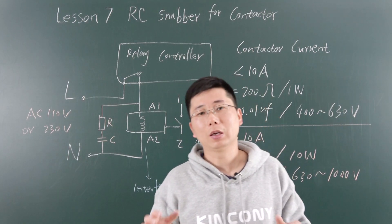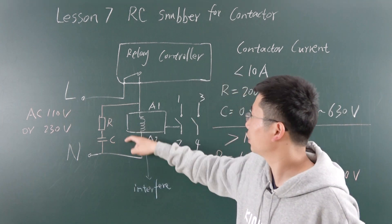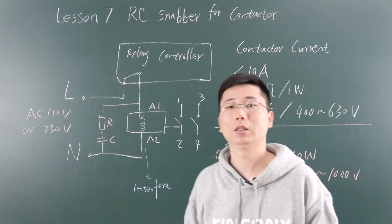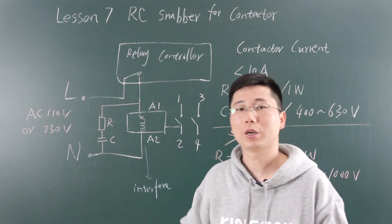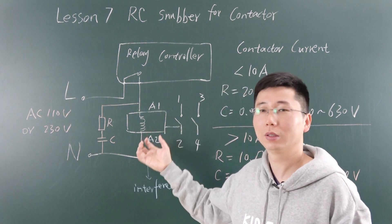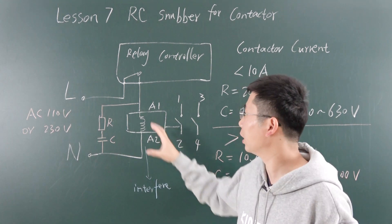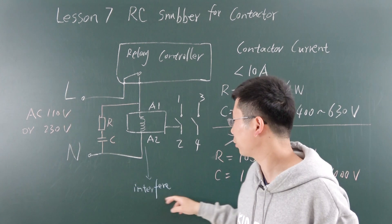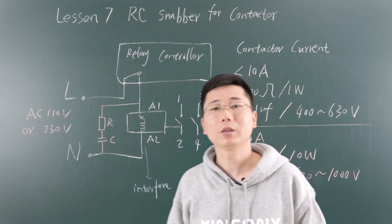Now I think you can understand how to add the RC to the AC contactor to reduce interference. If you make another project with large current loads, you can also add this circuit to reduce the interference. Thanks for watching.